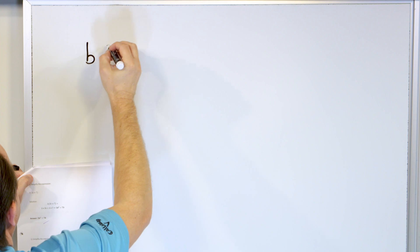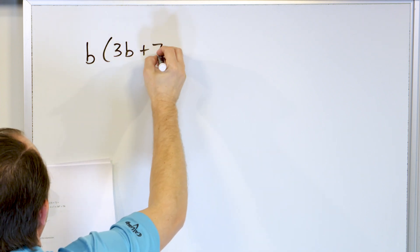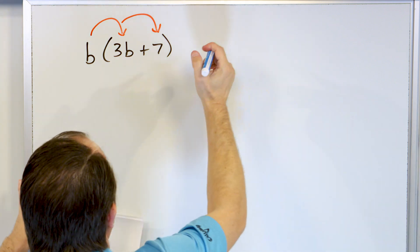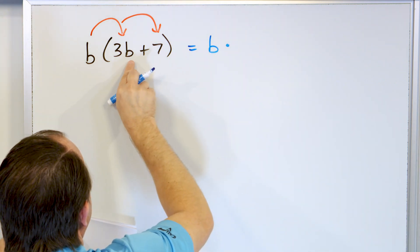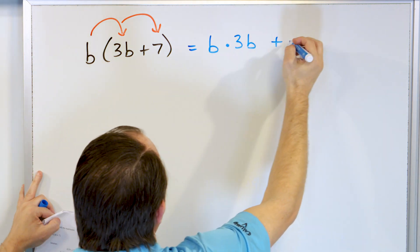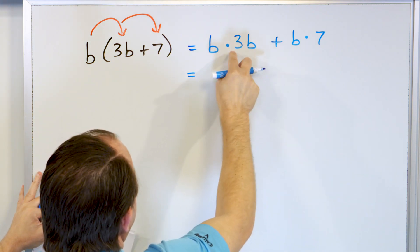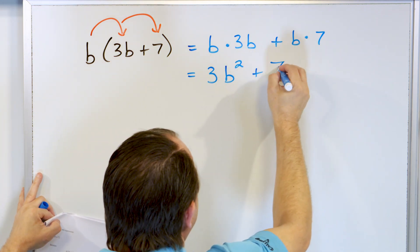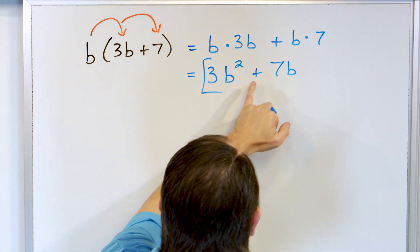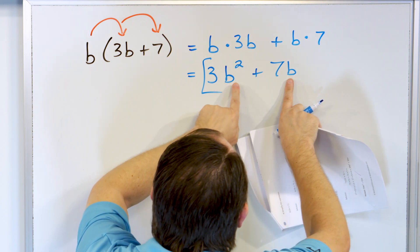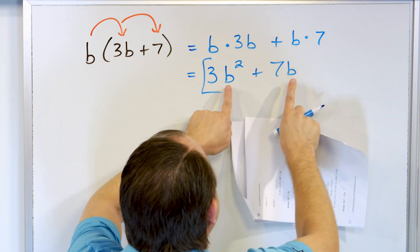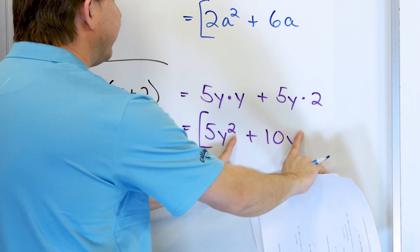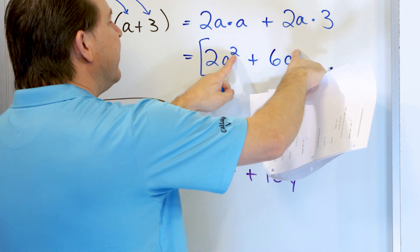What about b multiplied by parentheses 3b plus 7? The b distributes in. So b times 3b: the numbers give us 3, and b times b is b squared, so 3b squared. Then b times 7 is 7b, and we write the number first. So 3b squared plus 7b. I cannot combine these because the exponents are different — b squared versus b to the first power. For terms to combine, both the variables and the exponents must match.